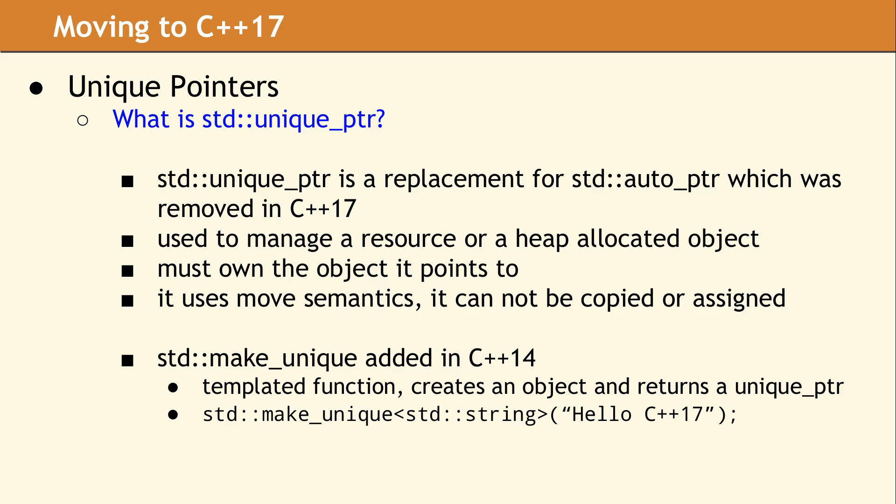std::unique_ptr is a data type which is movable, but not copyable, and this is often referred to as a move-only type. Because it is not copyable, only one unique_ptr at a time is allowed to point to a particular resource.